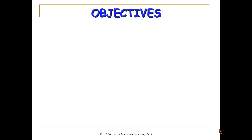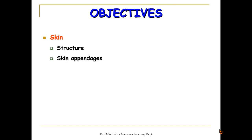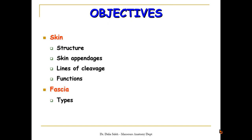The objectives of my presentation are: first I'm going to talk about the skin — its structure, skin appendages, lines of cleavage, and their functions. Then I'm going to talk about the fascia — its types, characters of each type, and its functions.